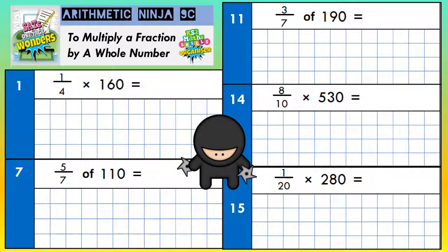Welcome, Arithmetic Ninjas, to multiplying a fraction by a whole number. Let's have a look at question 1: a quarter times 160. Now, this means exactly the same as a quarter of 160. So to find a quarter of 160, we need to divide by 4. A half would be divided by 2, a third would be divided by 3, a quarter divided by 4, a fifth divided by 5.